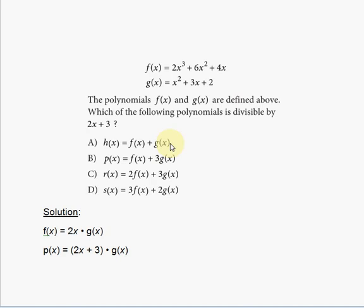Now 2x plus 1, but we need 2x plus 3. 2x plus 1 is not the same as 2x plus 3. It's a different factor. So that means h(x) does not have a factor 2x plus 3, so it cannot be divisible by 2x plus 3.